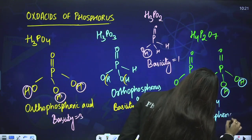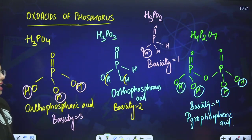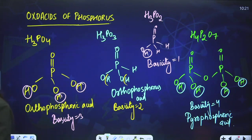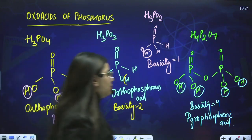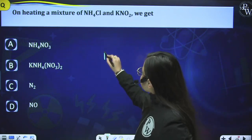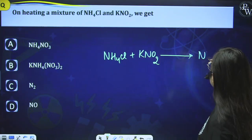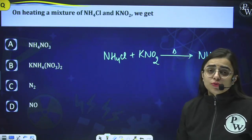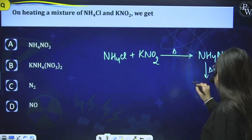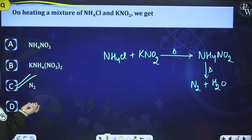This ends our complete P-Block Elements chapter. Now we start the practice session. Question 1: On heating a mixture of NH4Cl and KNO2, we get N2. When NH4Cl reacts with KNO2, NH4NO2 is formed. When heated again, N2 gas and water are liberated. So the answer is N2.